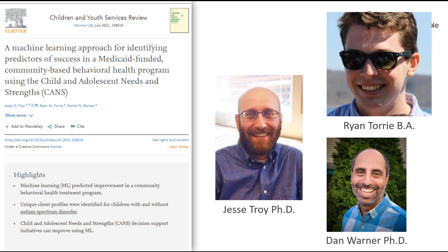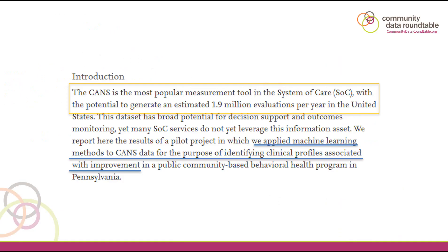Hello, thanks for joining us in this quick video where we will highlight some work we did with CANS data that was recently published in the Children and Youth Services Review. The CANS is the most popular measurement tool in the system of care in the United States, and we did a quick back-of-the-envelope analysis — it seems there's a possibility of about 1.9 million CANS done a year.